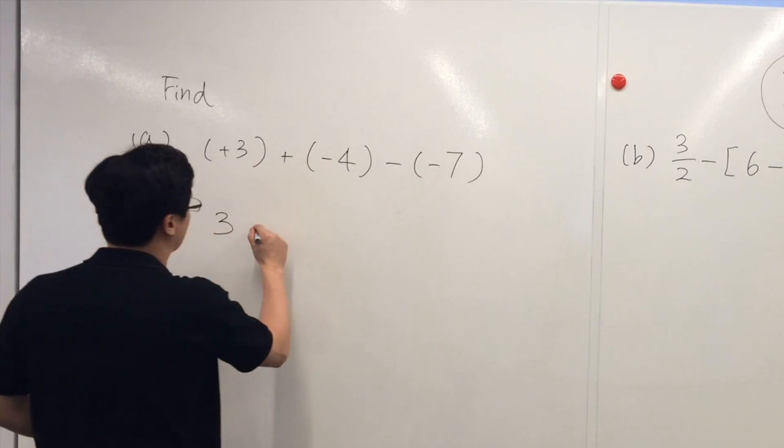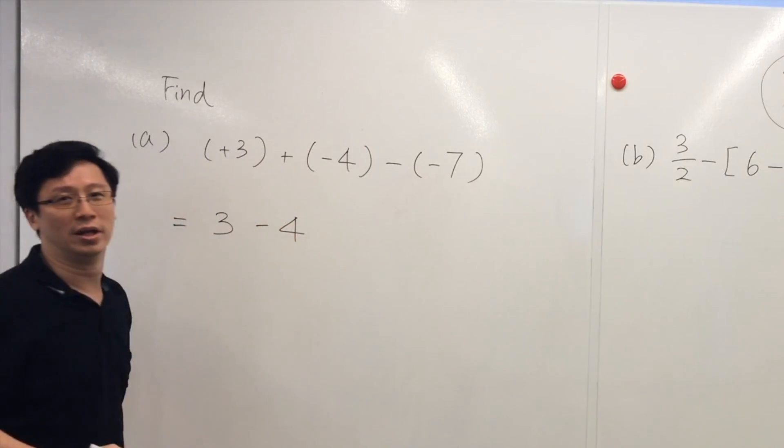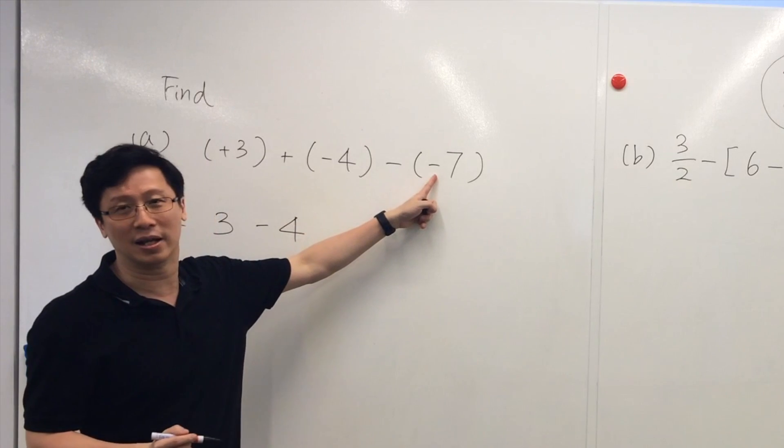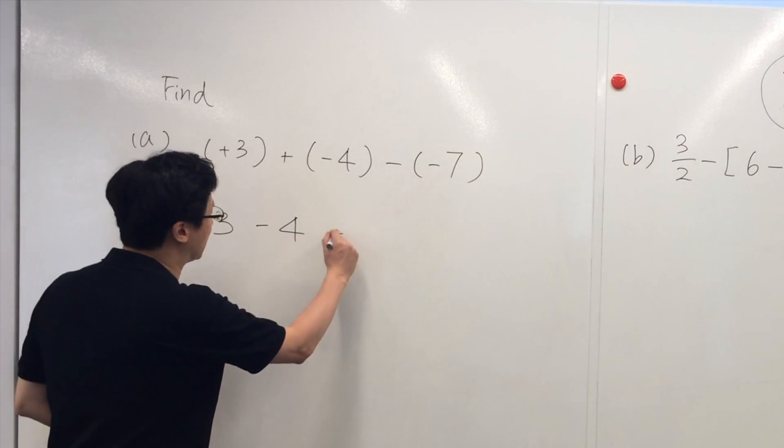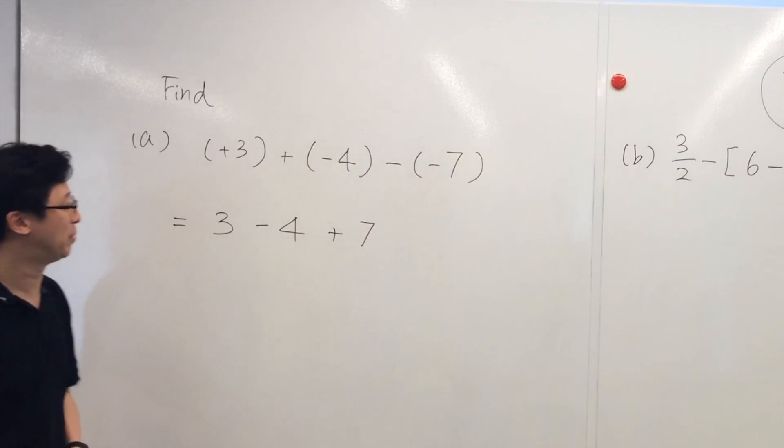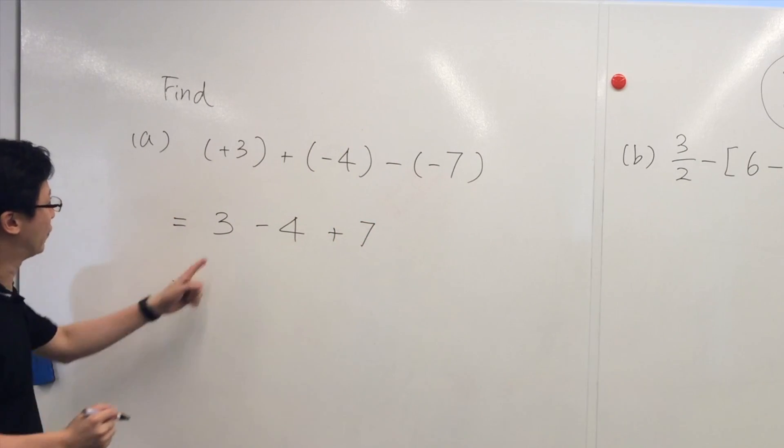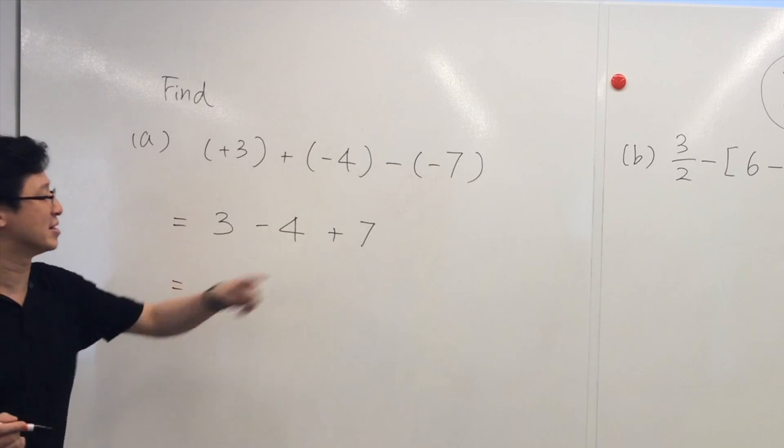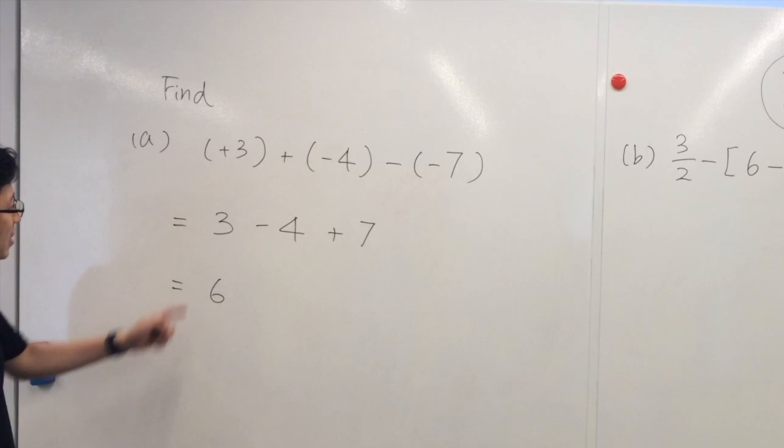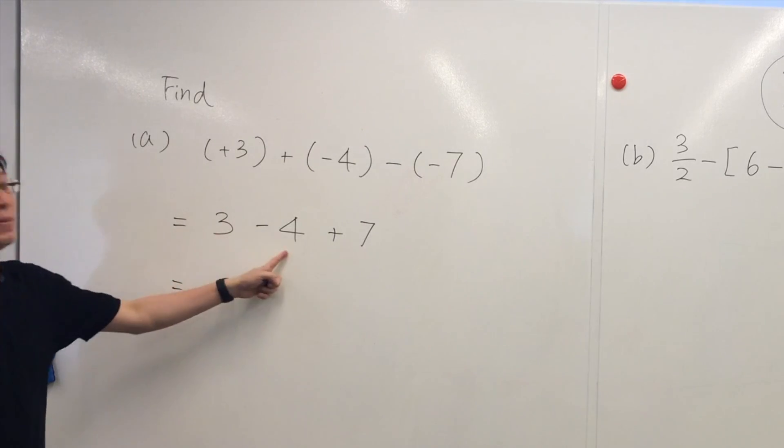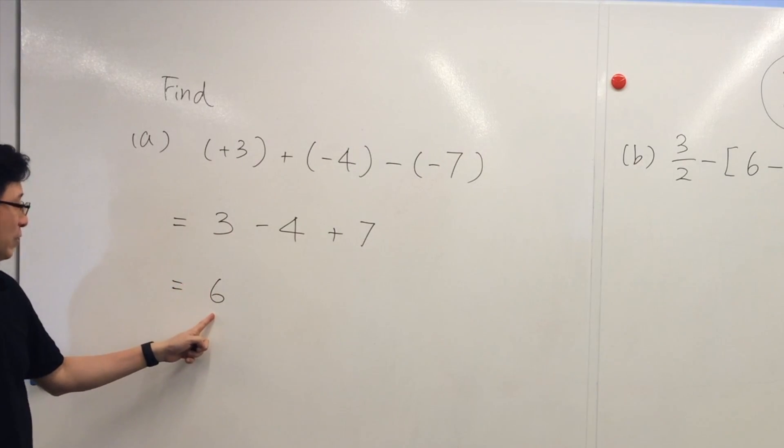And then minus a negative number—they are the same sign—so we end up with a positive number, plus 7. So 3 minus 4, we have negative 1. Plus 7, we have 6. That's the final answer. But of course, you can make use of the number line to figure out how we get 6 as the final answer.